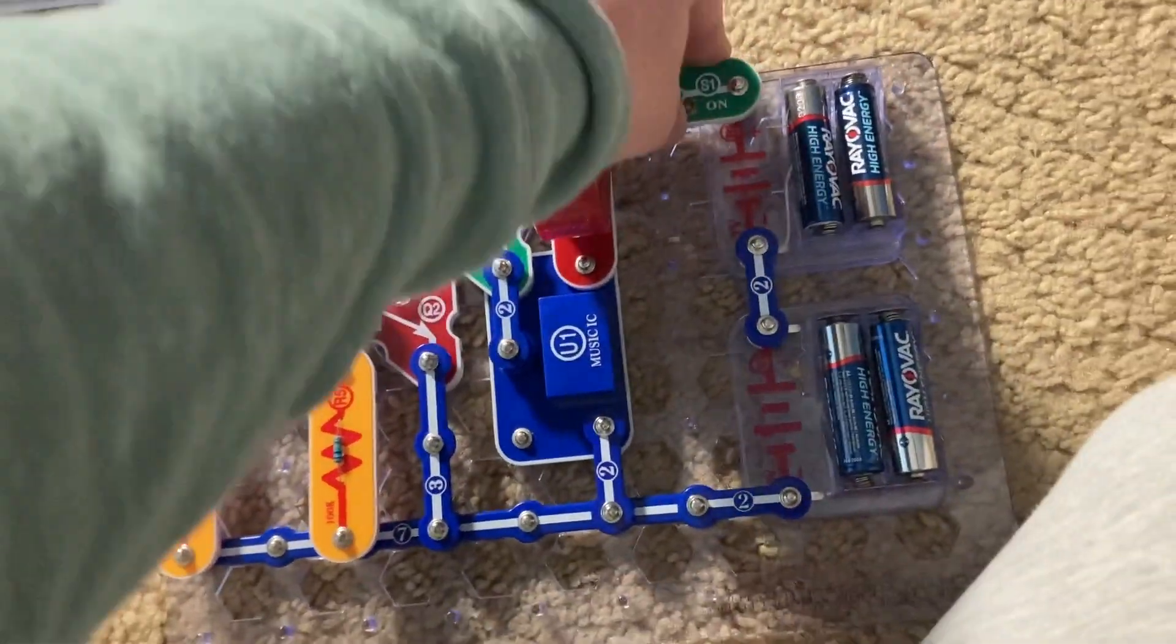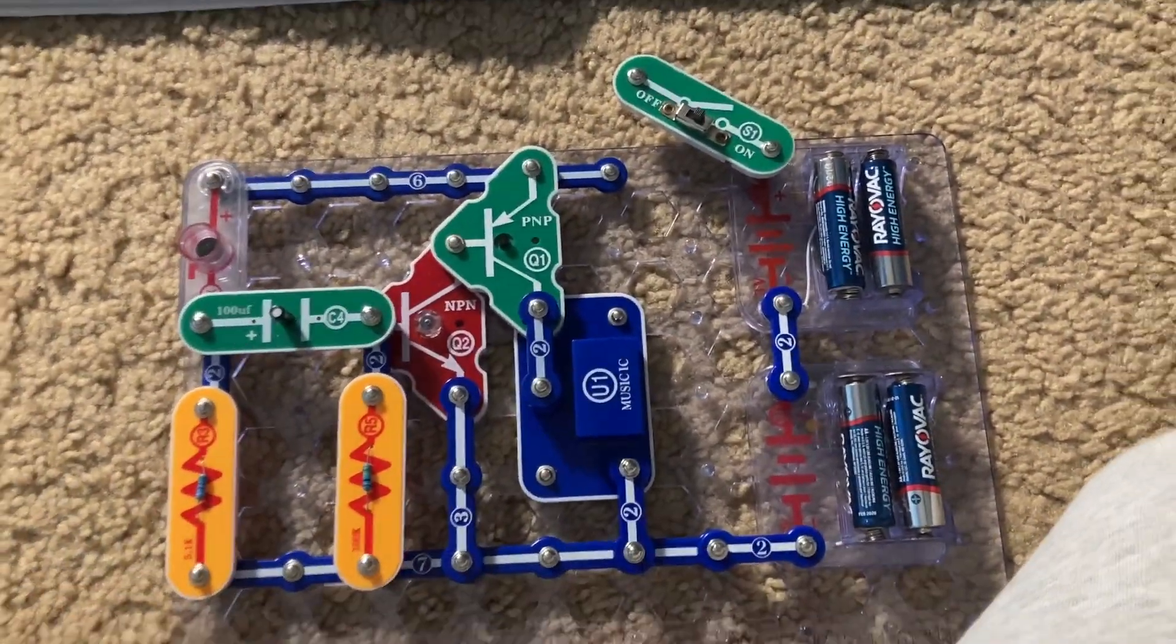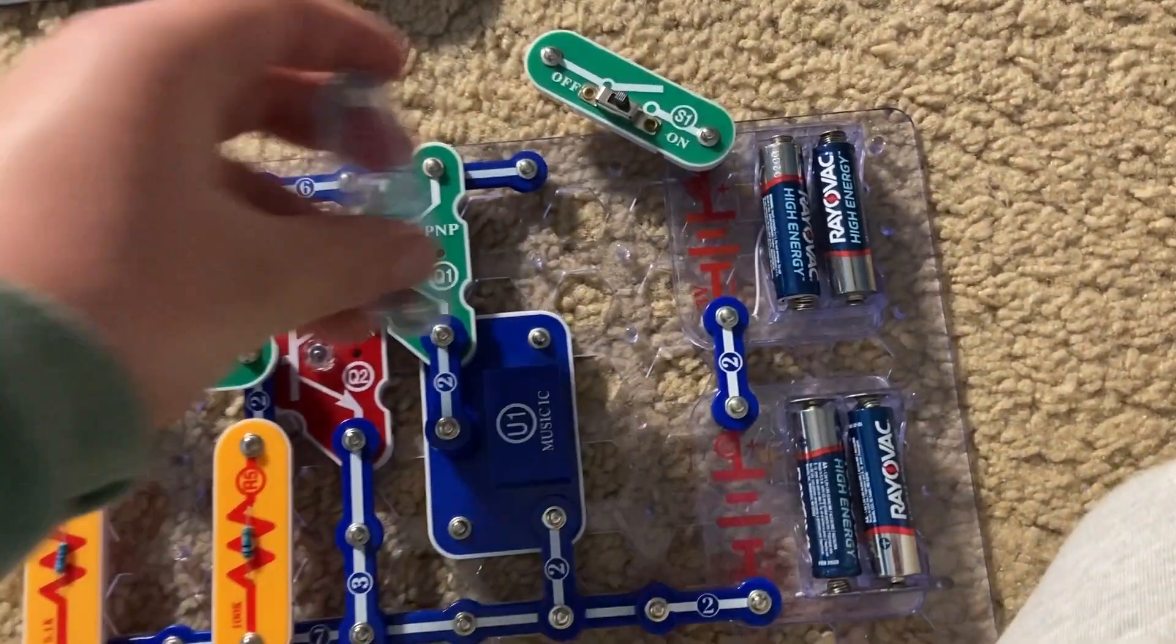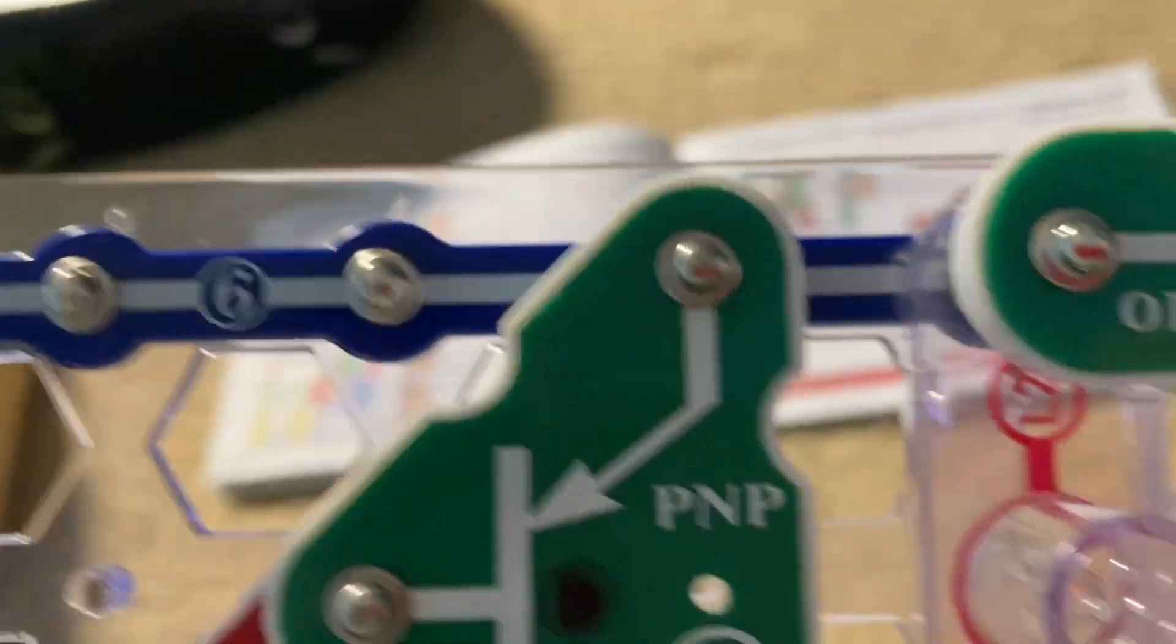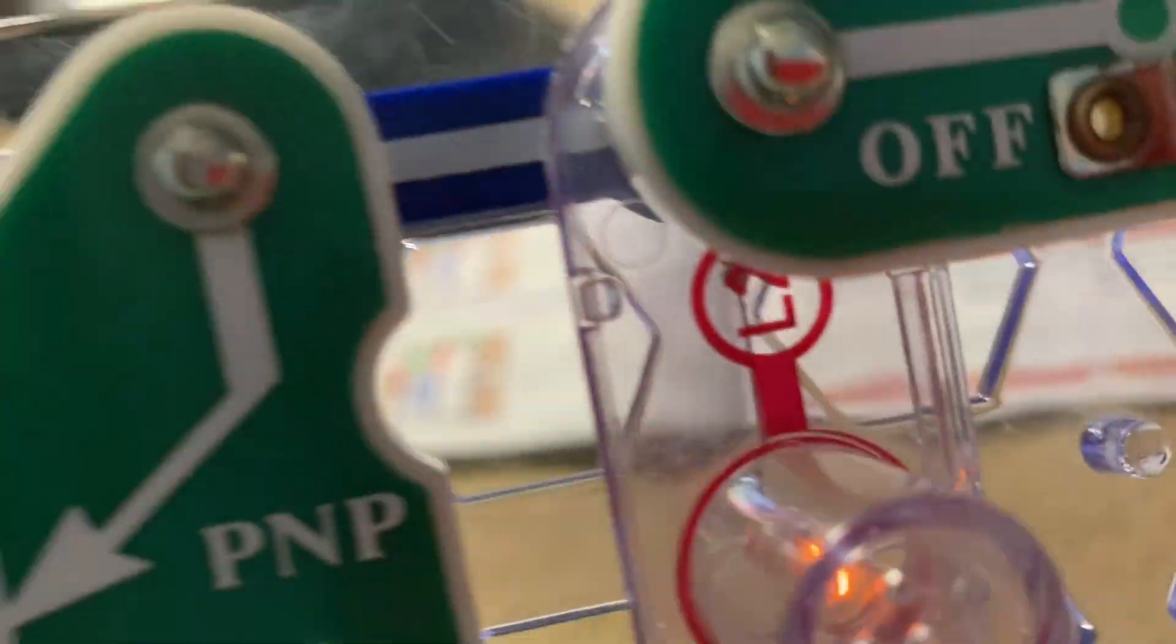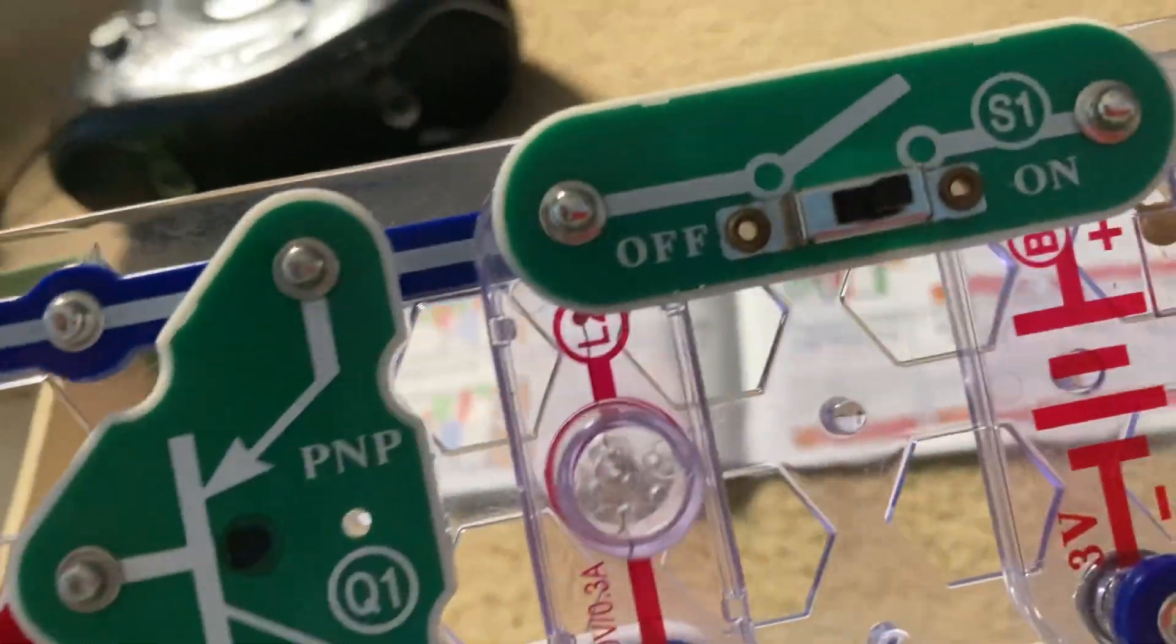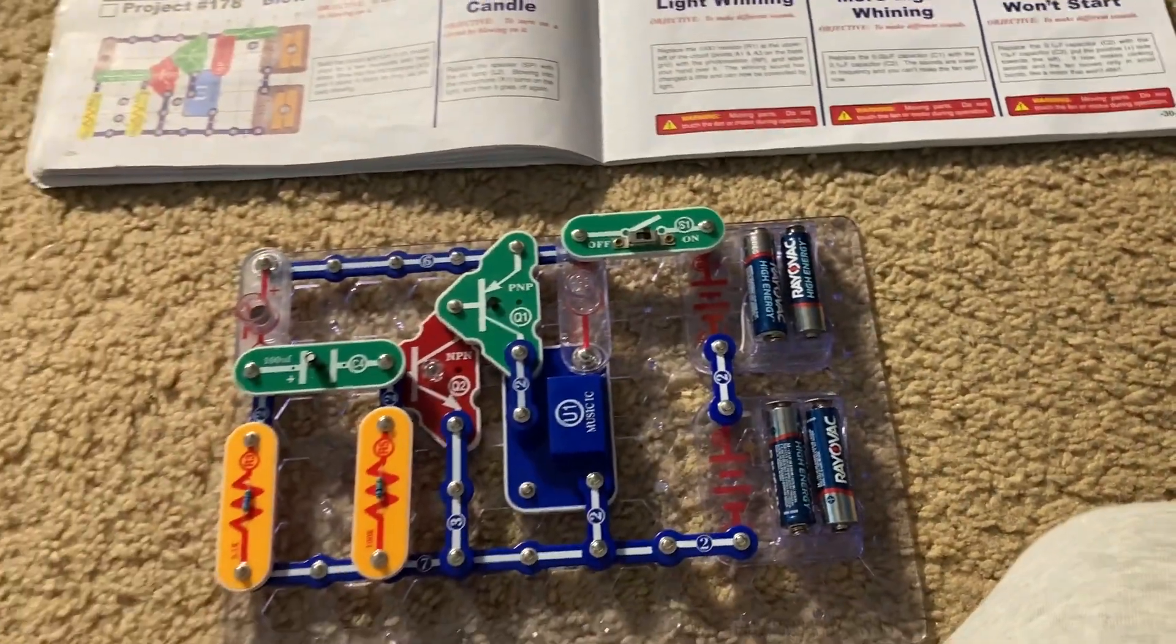And then for the next project we called blow on a candle, replace the speaker with the lamp and blowing into the microphone will turn the lamp on again. And it seems to be easier to turn it on than is to turn it off.